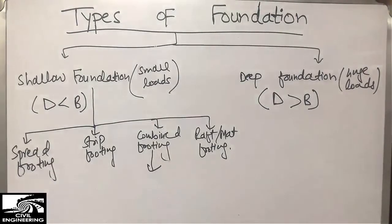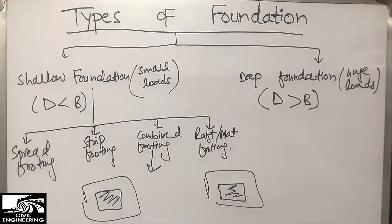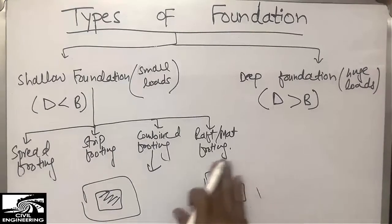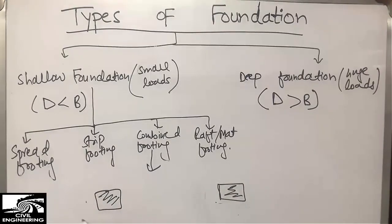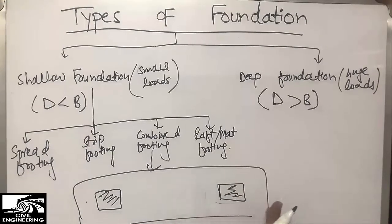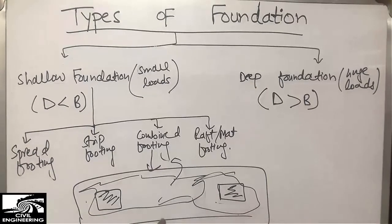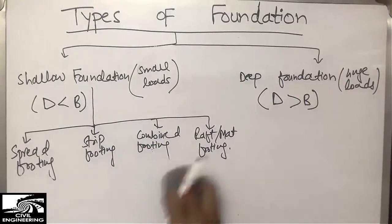The third type is combined footing. Combined footing is used when, for example, there are two columns close together — instead of placing separate spread footings for each column, we place one combined foundation to support both columns. The load coming from the two columns is transferred into this single footing, so we call it combined footing.